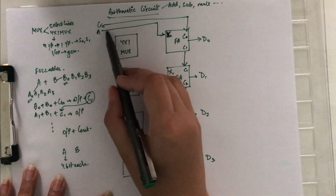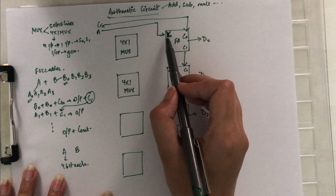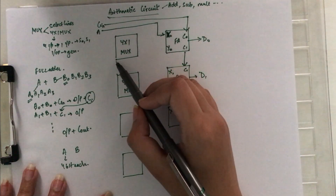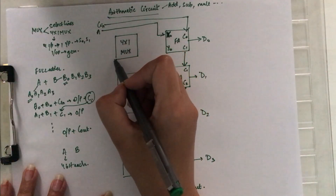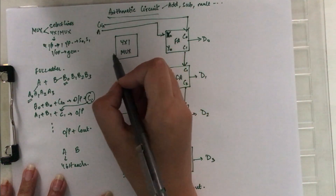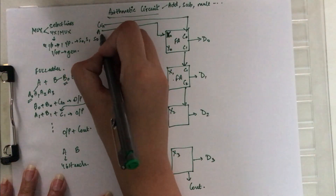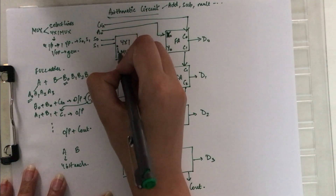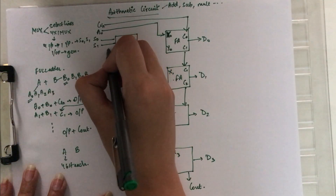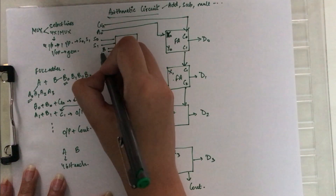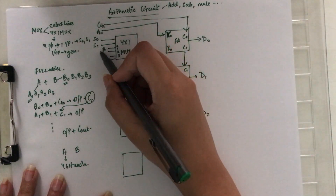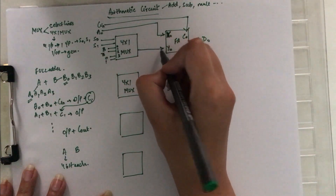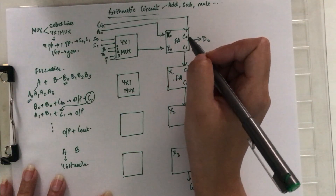A is the first operand which enters directly into the full adder at position X. The next position is Y, which needs the second operand, but the second operand is not added directly — it will be selected by the mux on the basis of select lines S0 and S1. The mux has four inputs: first input is B, second is B-complement, third is zero, and fourth is one. On the basis of the select lines, one of these four inputs is selected and enters the Y input of the full adder.